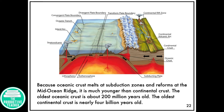Because oceanic crust melts at subduction zones and reforms at the mid-ocean ridge, it is much younger than the continental crust. The oldest oceanic crust is about 200 million years old, while the oldest continental crust is nearly 4 billion years old.